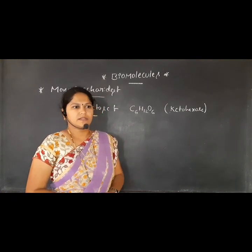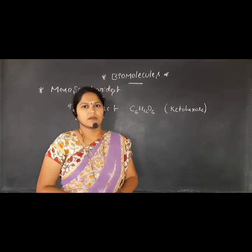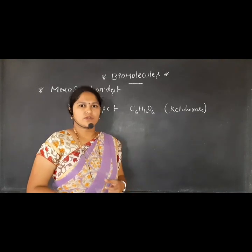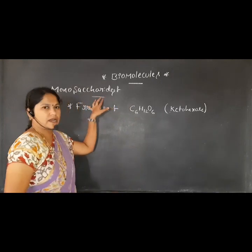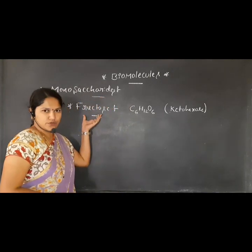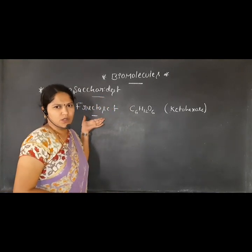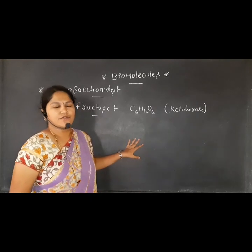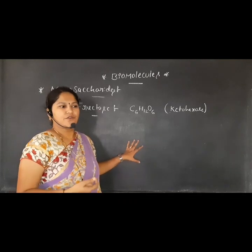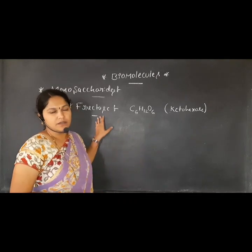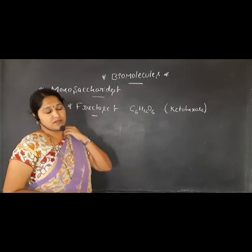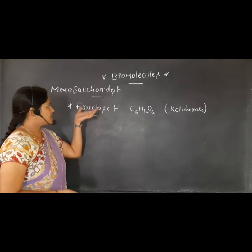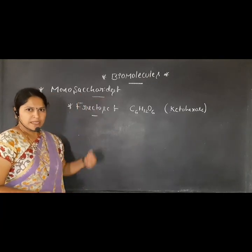After knowing the detailed information regarding glucose as the best example of a monosaccharide, let us move on to one more important example: fructose. Fructose is called so because most of the percentage of fructose is found in fruits. That is why fruits are sweet — due to the presence of the monosaccharide called fructose. It is famous as a fruit sugar.